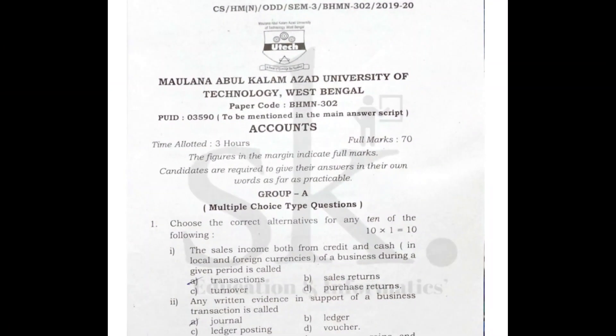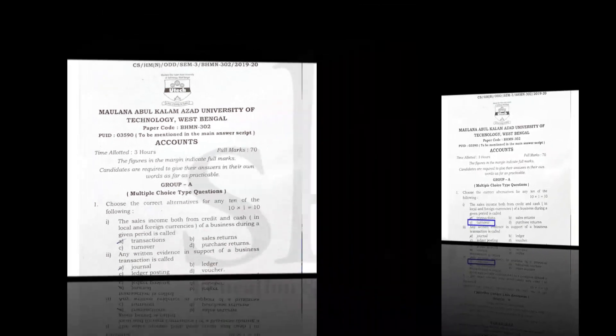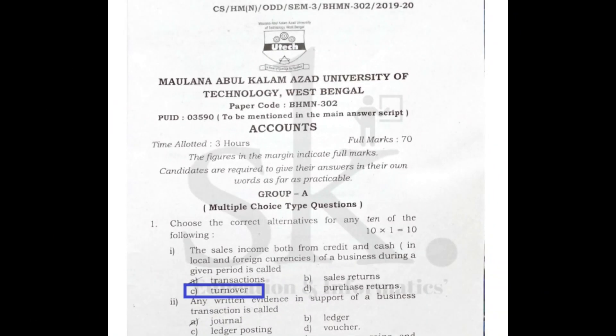The first question from 2019 states: the sales income both from credit as well as cash, in case of local and foreign currency of a business during a given period, is called — whatever sales amount a company earns, be it credit or cash, is basically termed the turnover of that company.